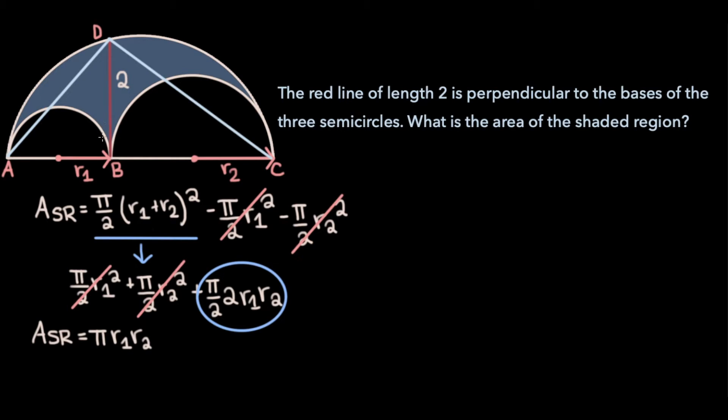Notice that we form three distinct right triangles. Triangles ABD and CBD are both right triangles because the red line is perpendicular to the bases of the semicircle. And triangle ACD must also be a right triangle, because angle D is the angle inscribed in the semicircle, and therefore it must be 90 degrees. And there will be a link to a video I've made proving why this must be true in the top right hand corner of the screen right now.